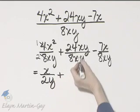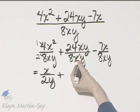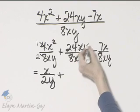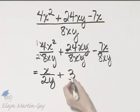Plus, here x's divide out, it's a power of 1 over a power of 1, and remember 1 minus 1 is 0, and x to the power of 0 is simply 1. The y's divide out, same reason, 24 divided by 8 is 3.